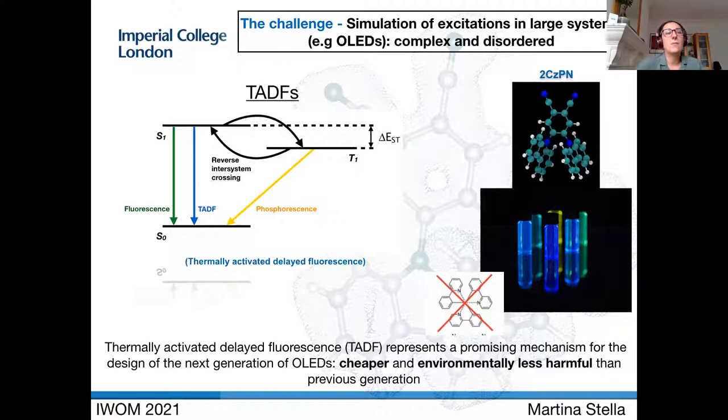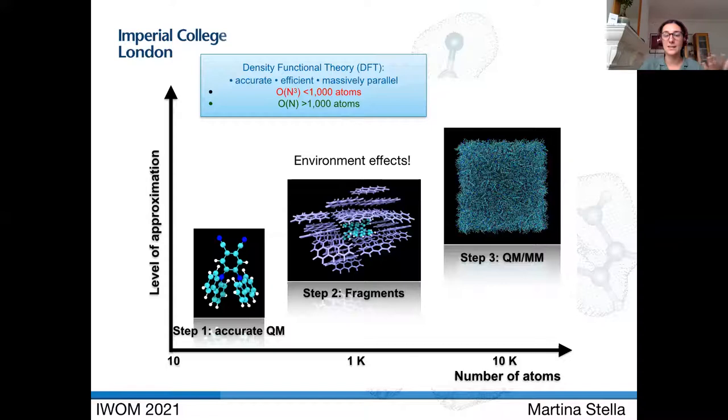When it comes to modeling this electronic structure, the important quantity is delta EST, which is the energy between T1 and S1. You need an accurate method to describe the electronic structure, but you also need a method that can compute energies for systems up to thousands of atoms, because environment effects and disorder effects can be very important.